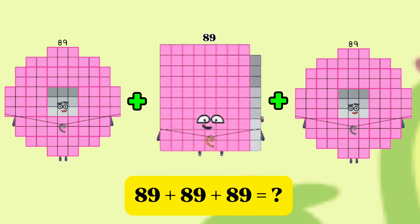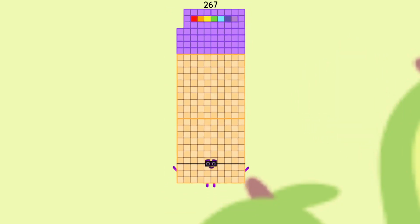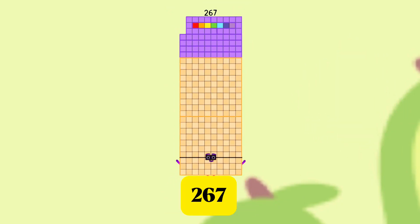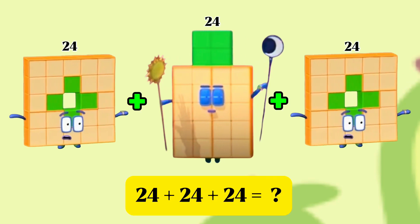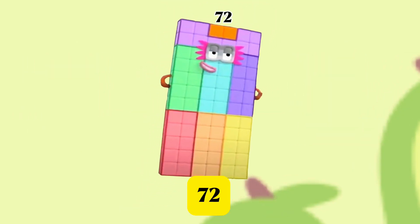89 plus 89 plus 89 is equals to 267. 24 plus 24 plus 24 plus 24 is equals to 72.